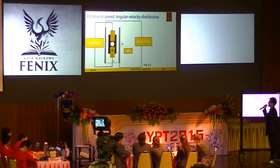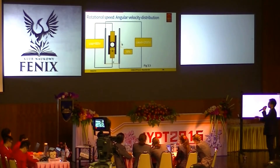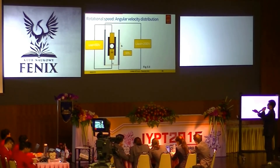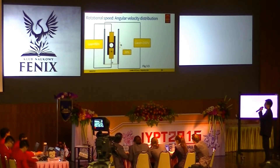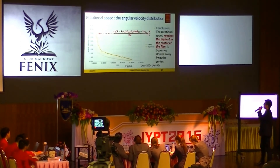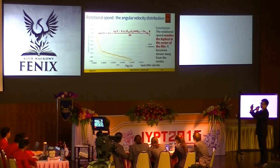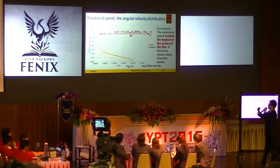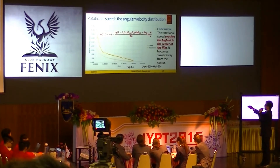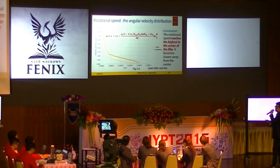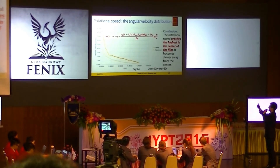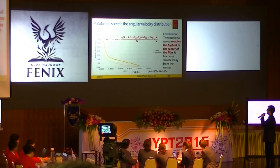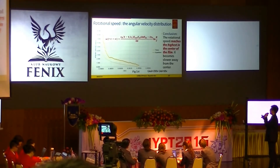For the rotational speed, I first tested the angular velocity distribution under electrolysis voltage of 50 V and external electric field of 200 V. The figure shows that near the center the film achieves the maximum angular velocity, and speed decreases away from the center. The experimental line is slightly higher than the theoretical line, which I believe is caused by CCD camera error, but the trend matches the theoretical line very well.